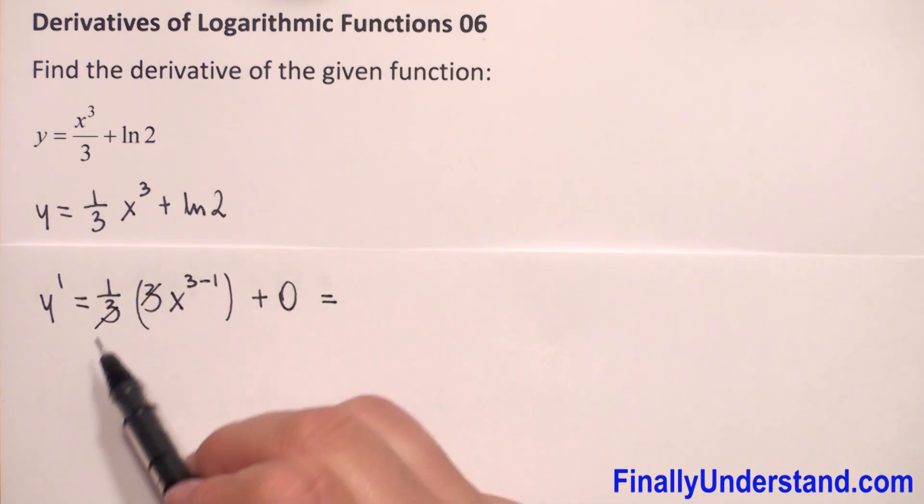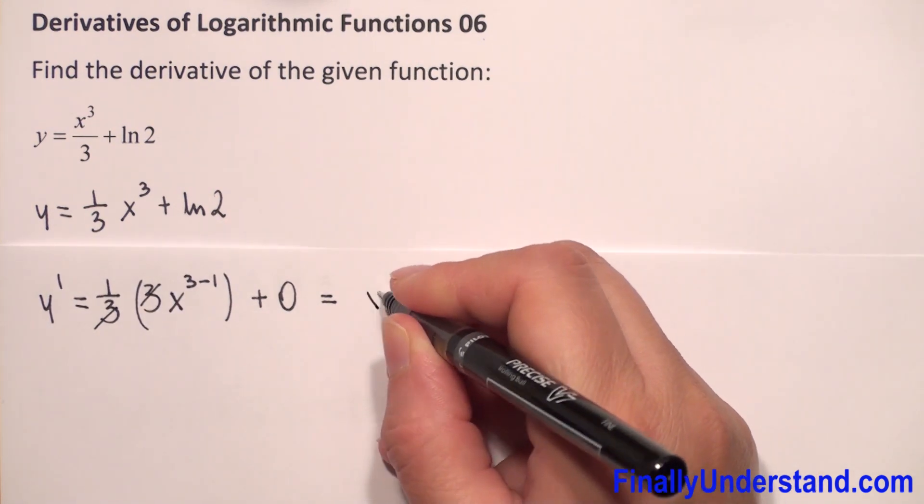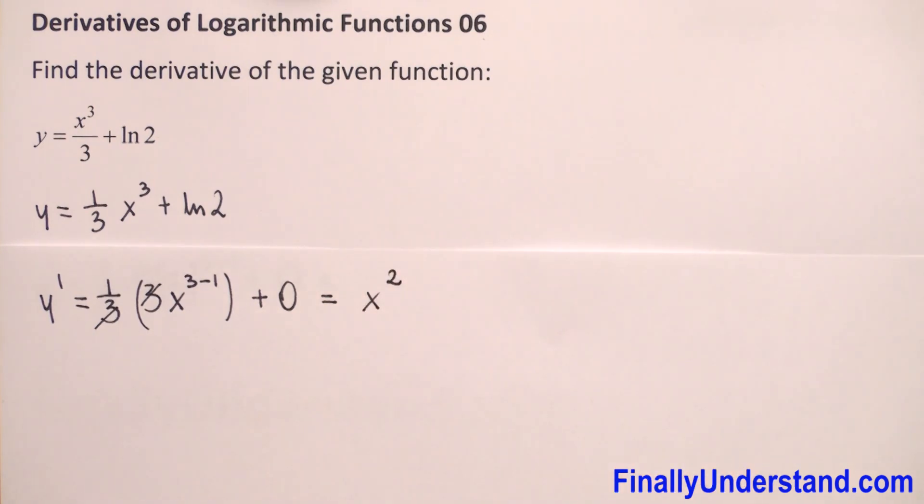3 and 3 we can reduce because we have multiplication, so our derivative is equal to x squared. This is my solution.